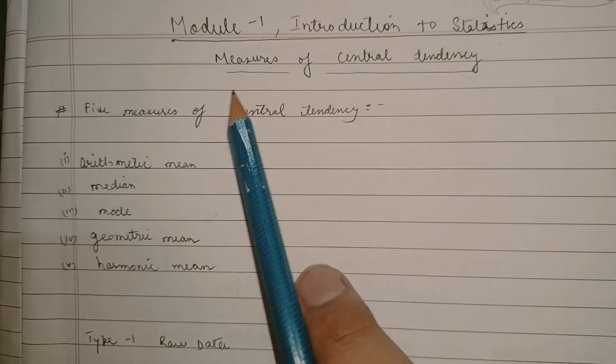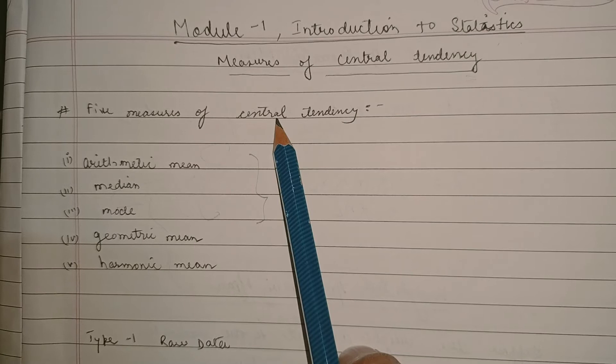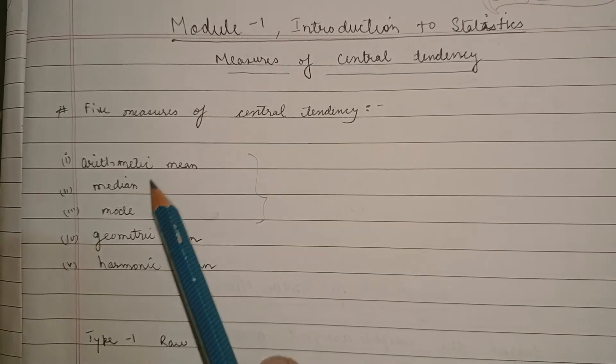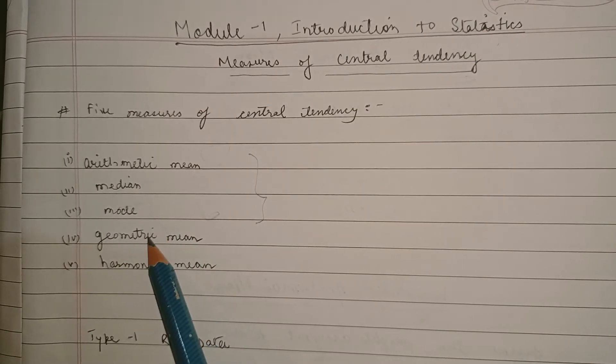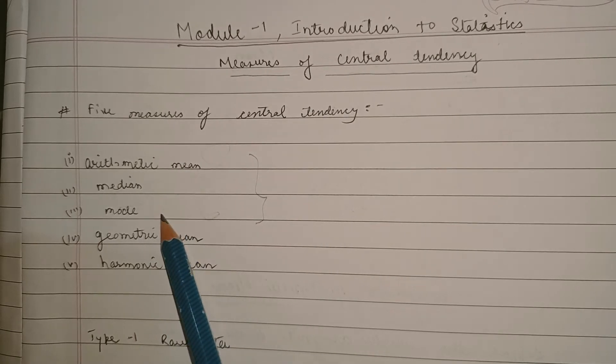So the first very first topic is measures of central tendencies. There are basically five kinds of central tendencies: arithmetic mean, median, mode, geometric mean and harmonic mean. But we would be mostly dealing with the first three: arithmetic mean, median and mode.